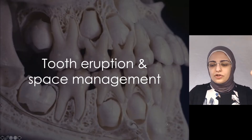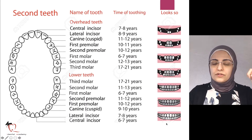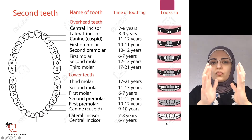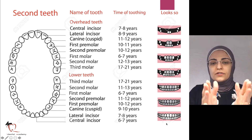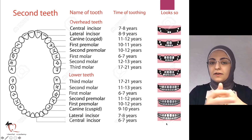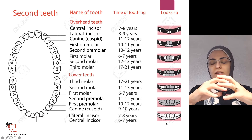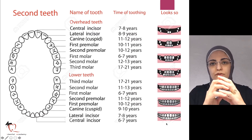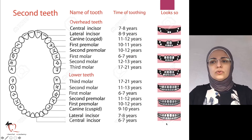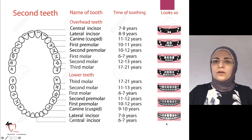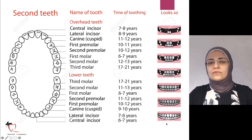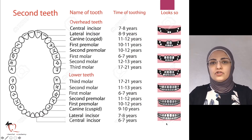Let's look first at tooth eruption and space management. It's very important that you become super familiar with the tooth eruption sequence — the timing and the age at which each tooth should erupt. Mixed dentition basically refers to kids around age six when they start to have their first permanent tooth. Usually it is the first molar or the lower centrals, and in general there is a tendency for lower teeth to erupt before upper teeth.